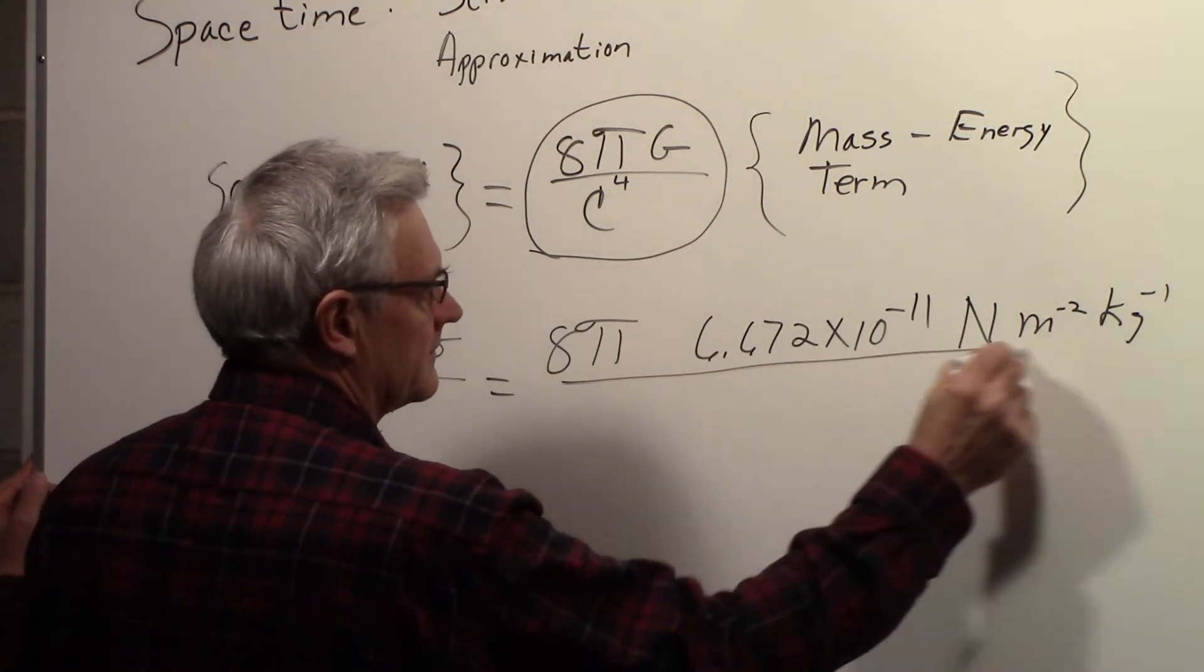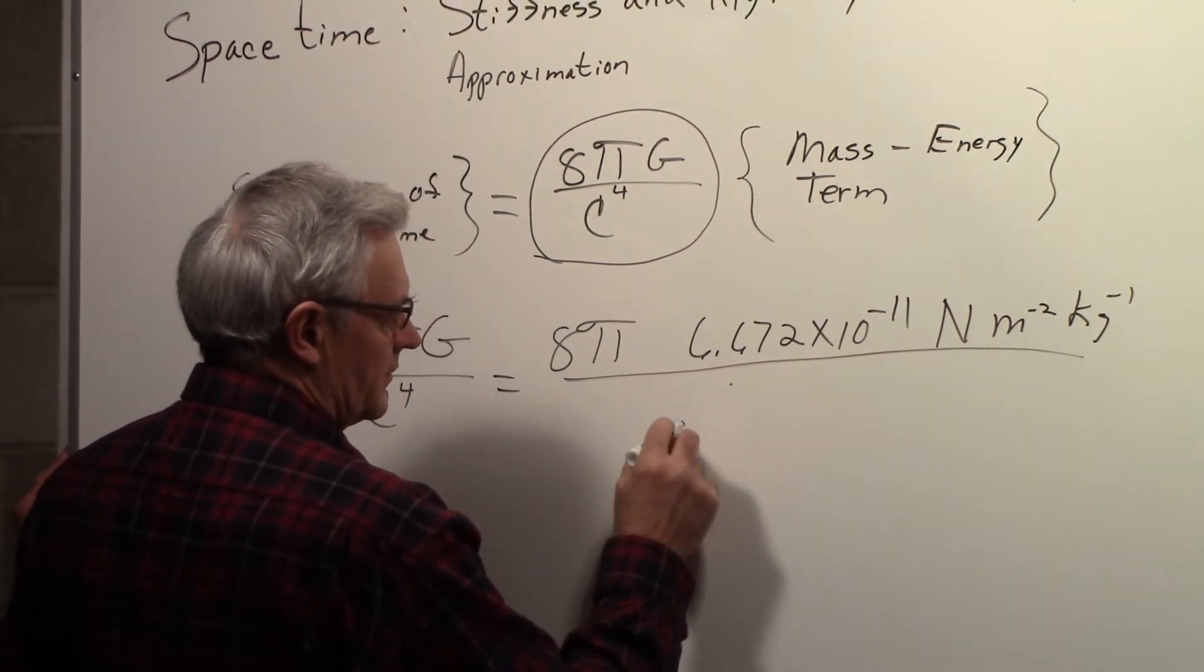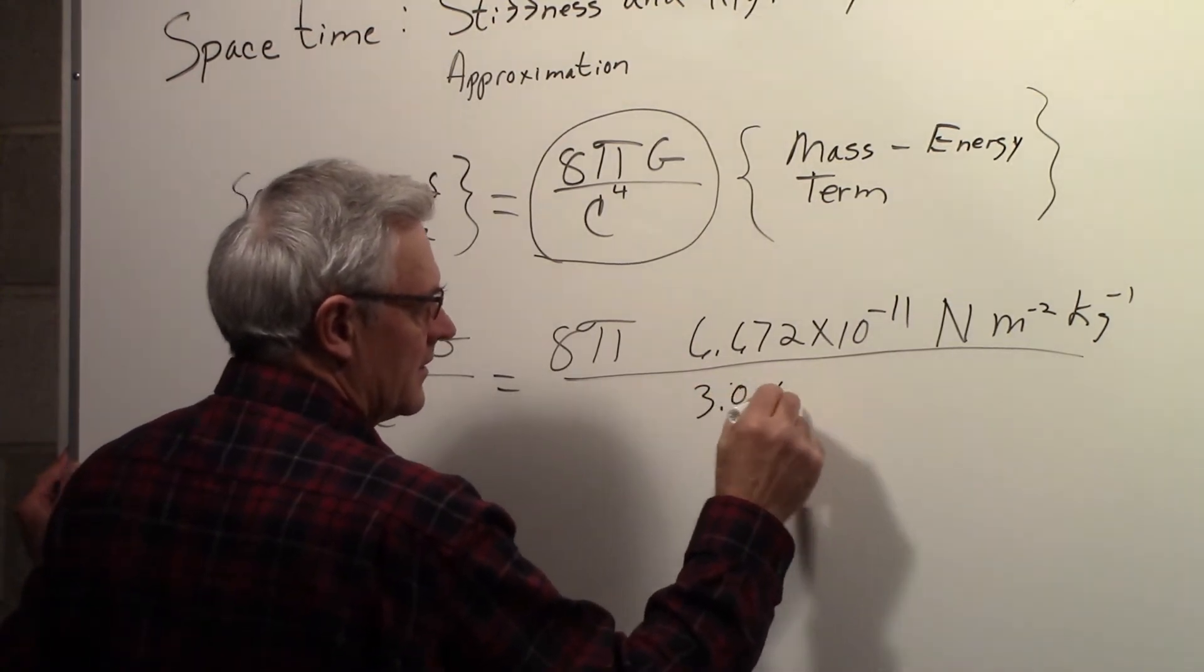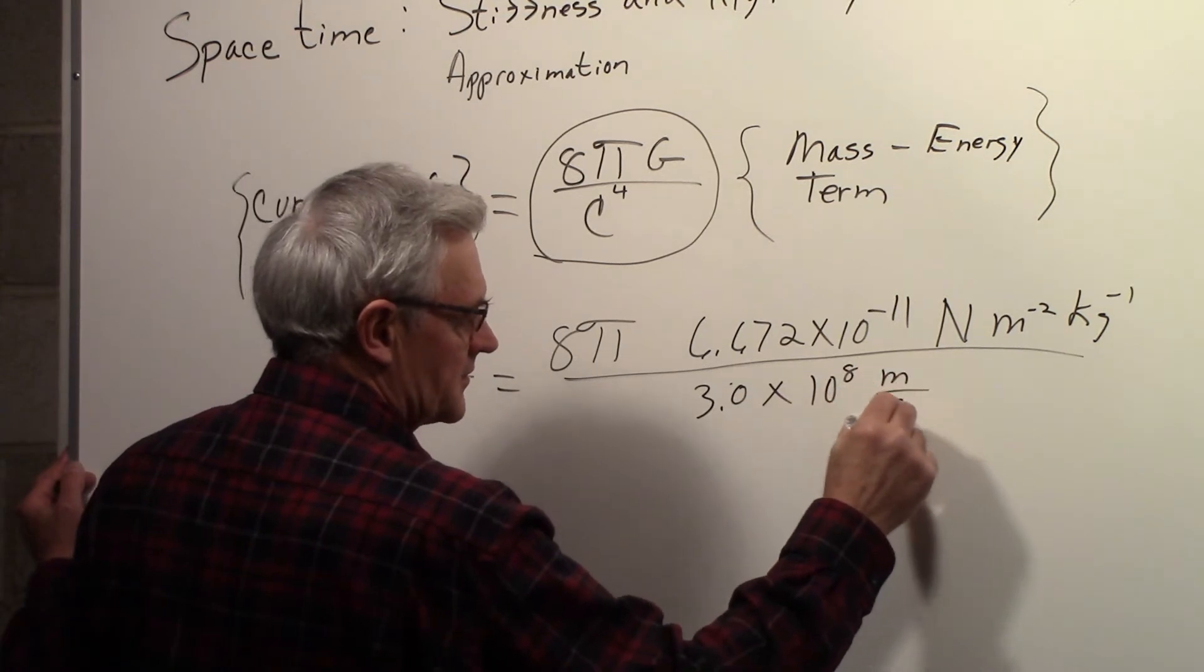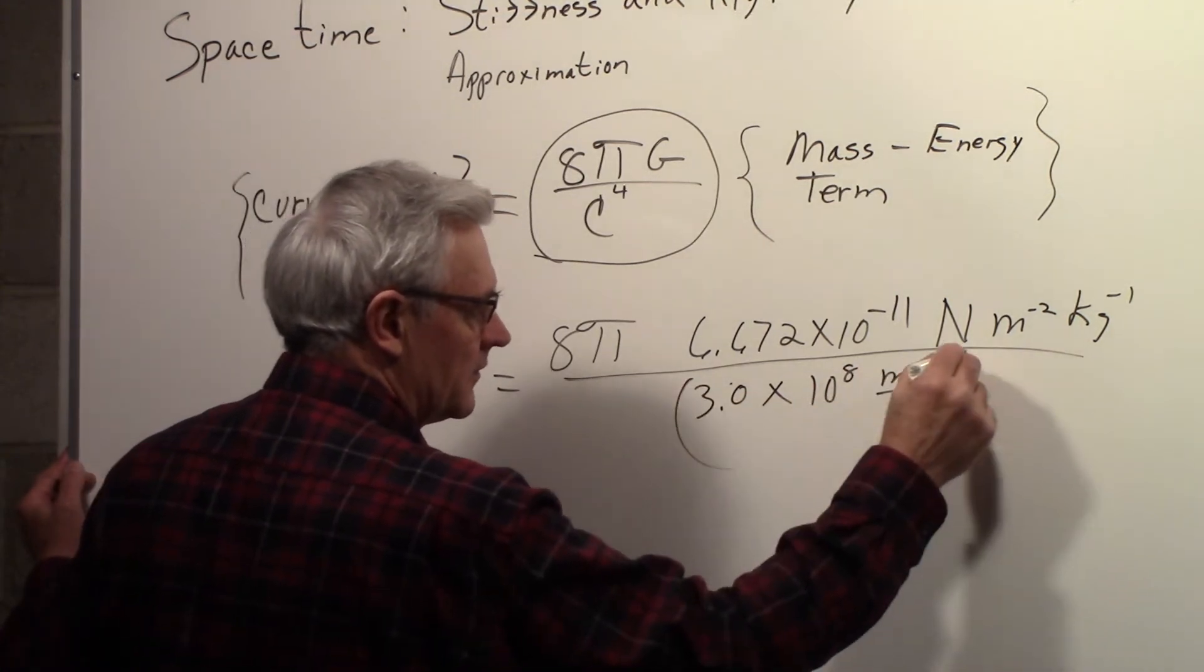divided by c to the 4th, so roughly 3.0 times 10 to the 8th meters per second, to the 4th power.